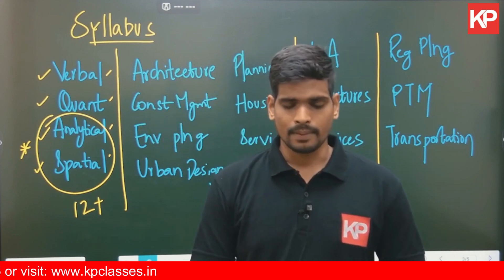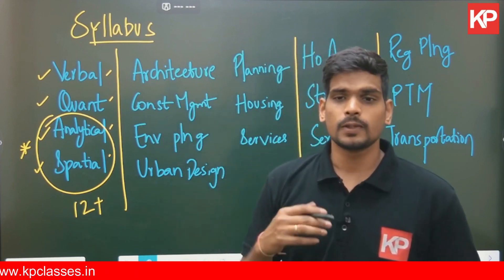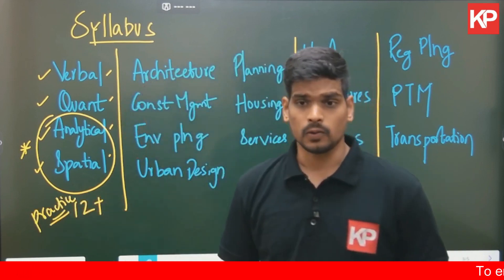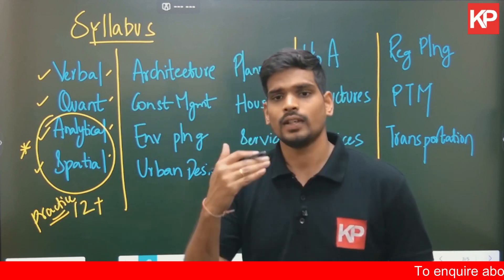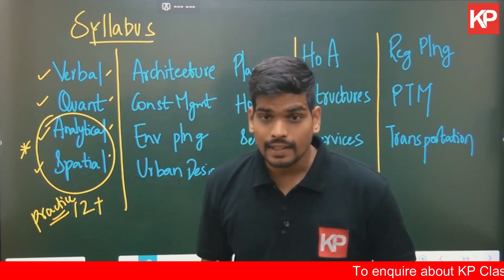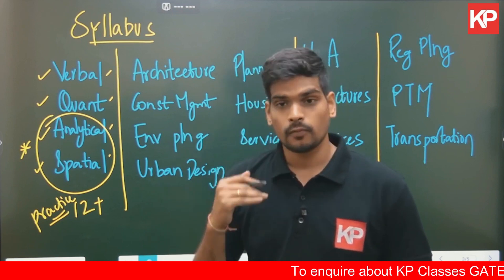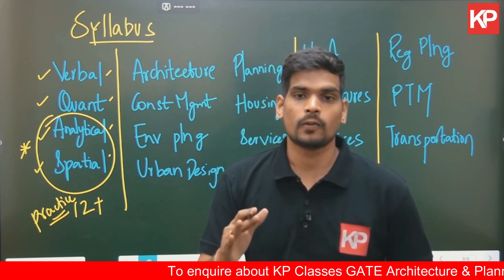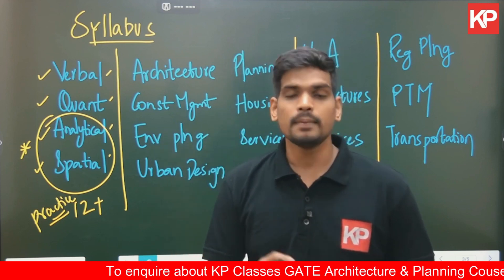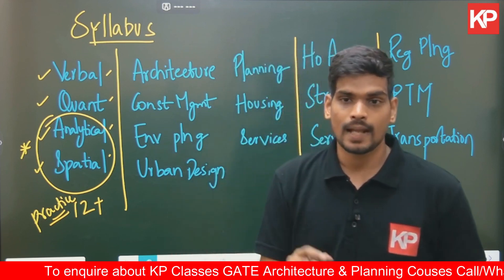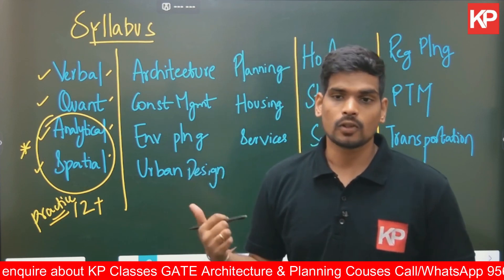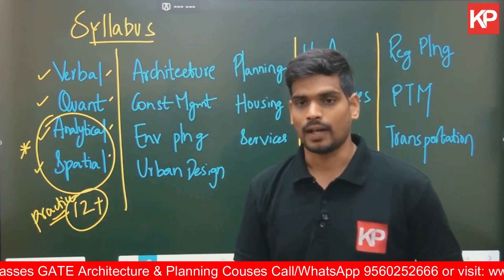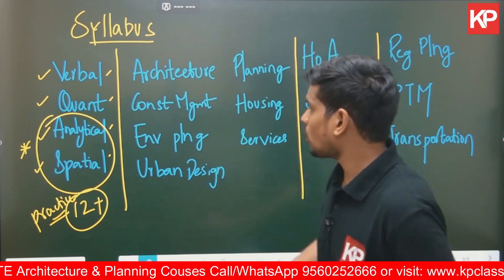The only way to approach general aptitude is through practice. Even in coaching classes, after attending lectures on quant and reasoning, we recommend students to focus on practice. Right from the start of your preparation, set a daily target — spend at least 15 to 30 minutes on general aptitude. These are not topics you learn in a single day; you need continuous practice to achieve the target of 12 plus marks.